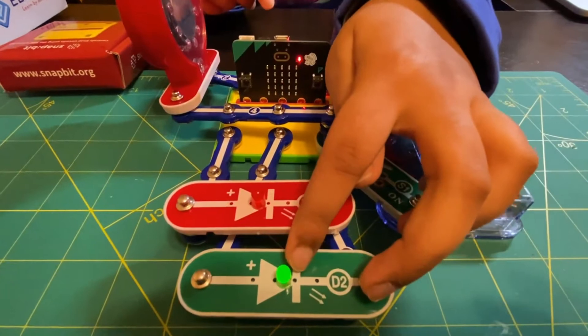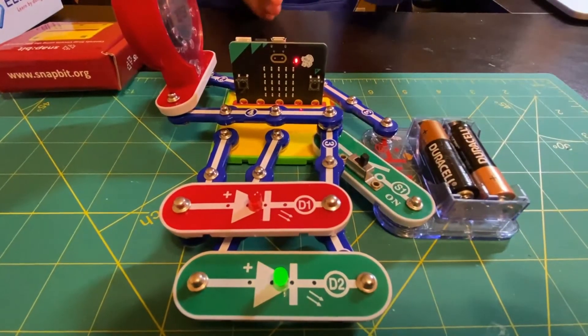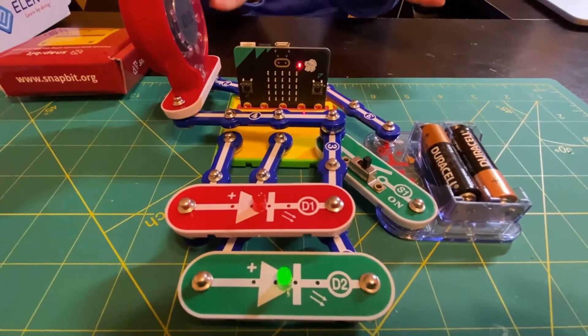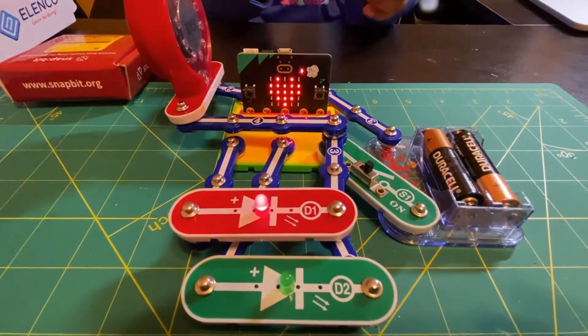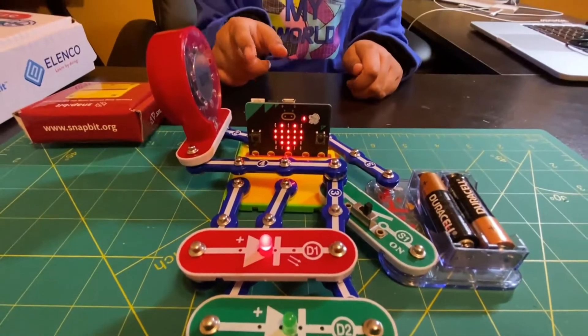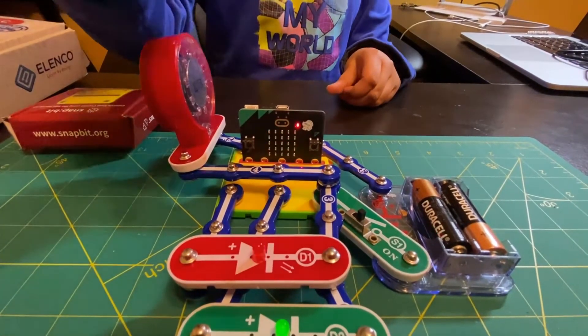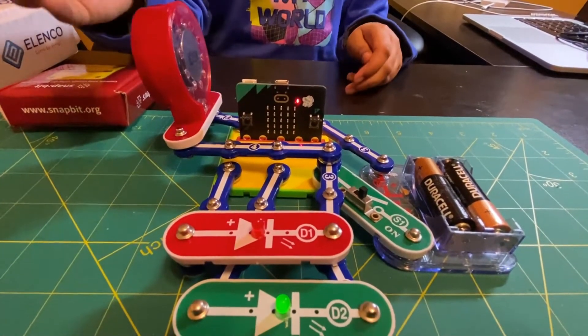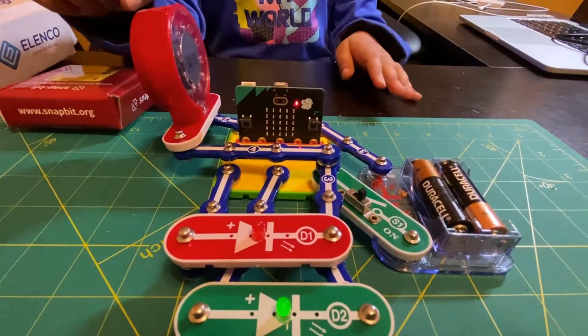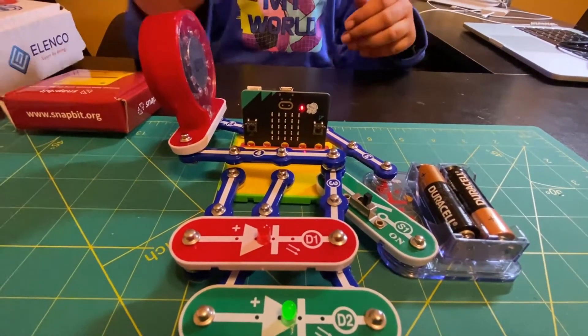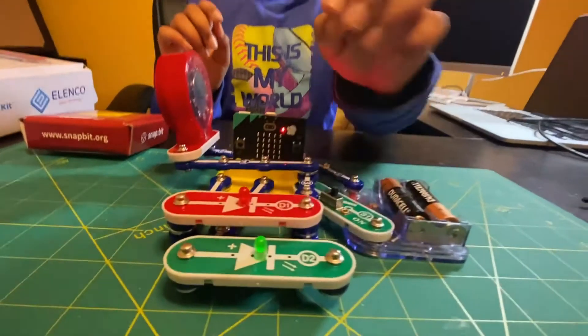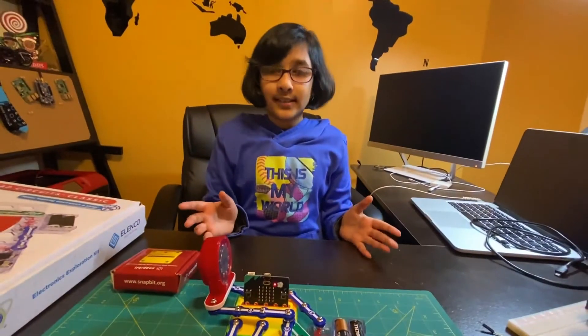So here you see the green LED is on, and I'm going to make a loud sound, like a clap. So you saw there the red LED had turned on, and then after that the speaker made sound. And then after a few seconds, it turns back to indicate the quiet sound again.